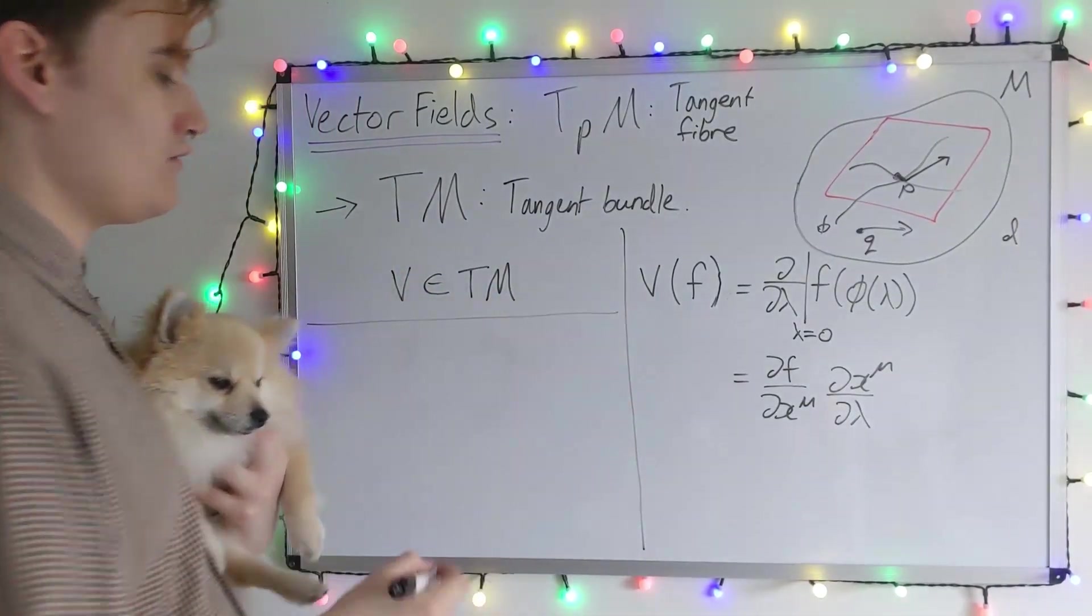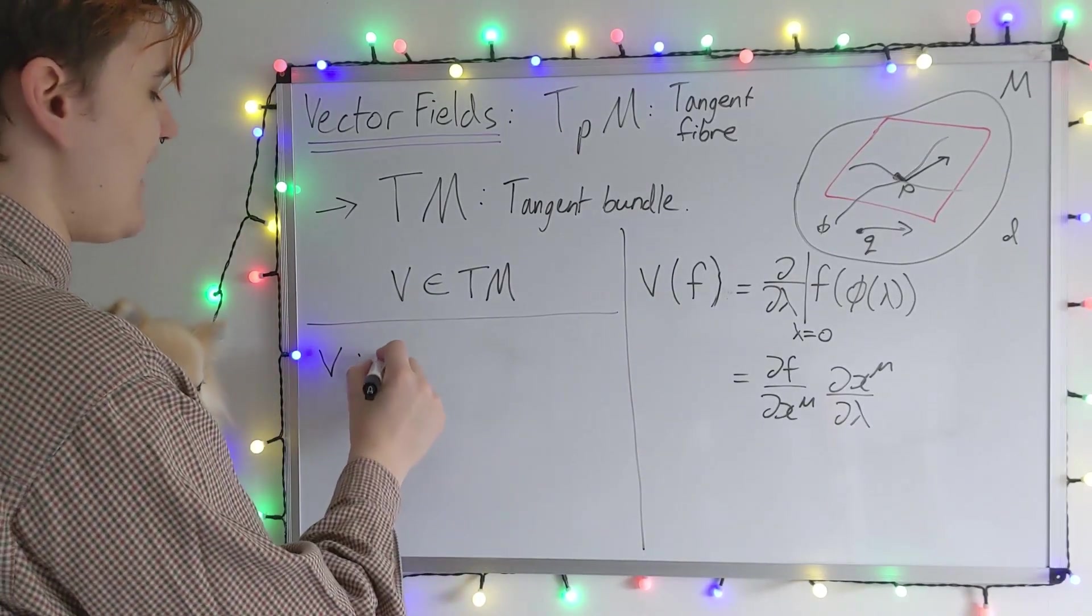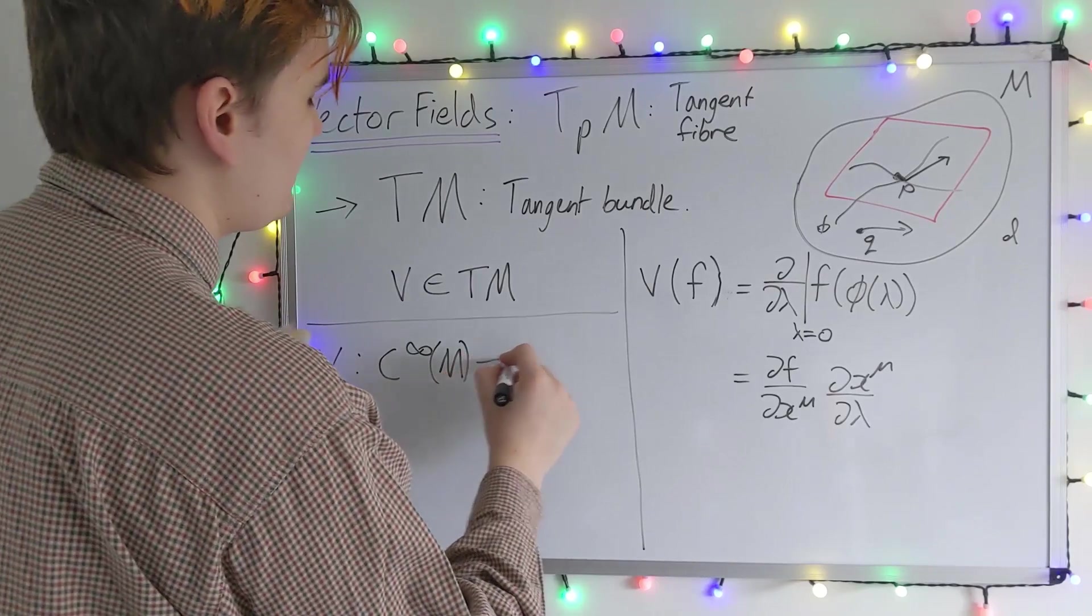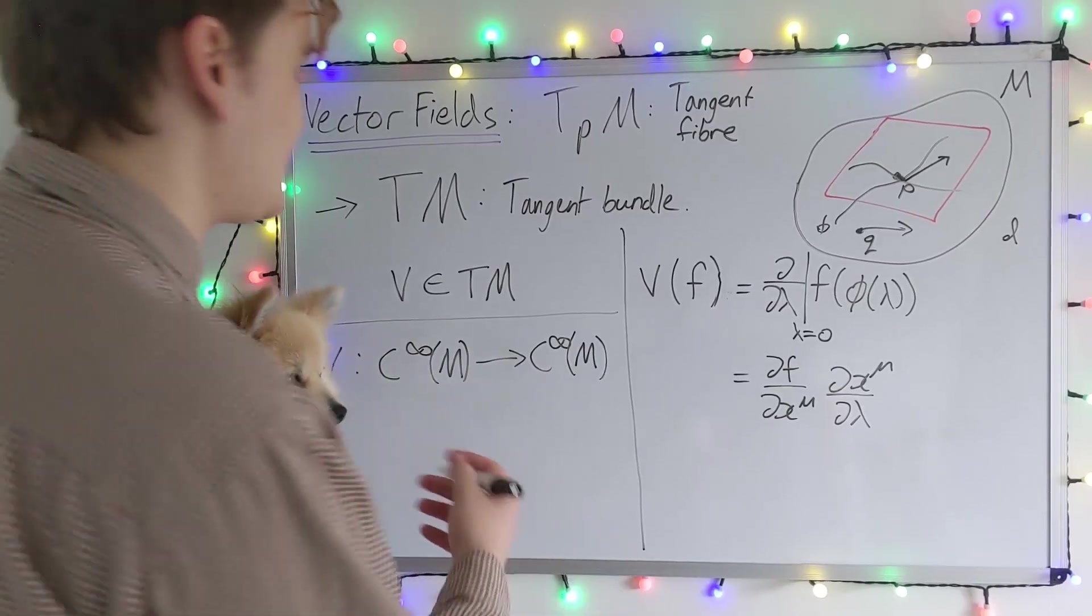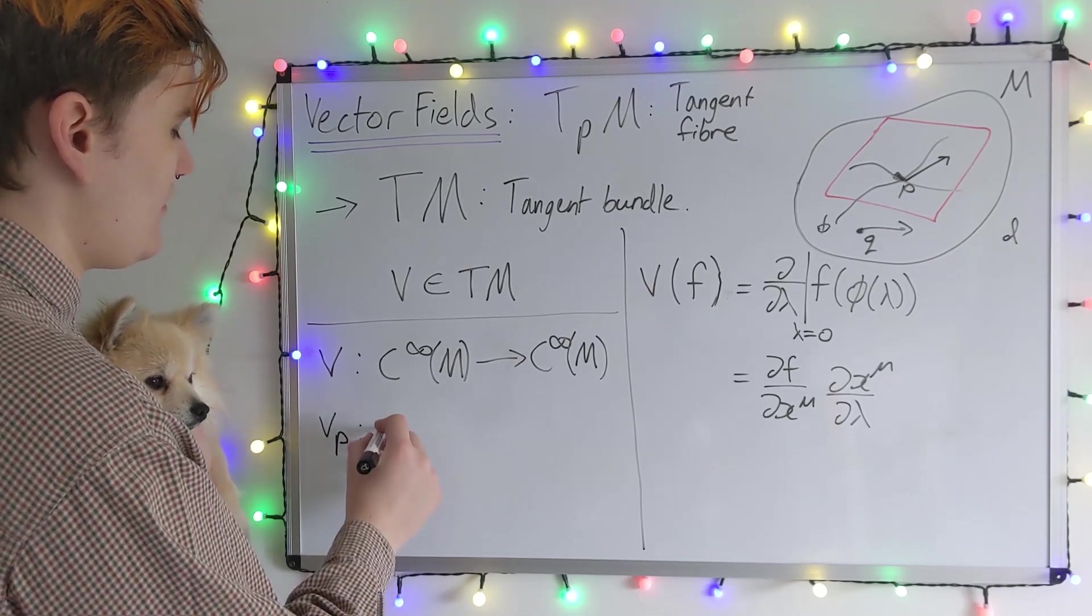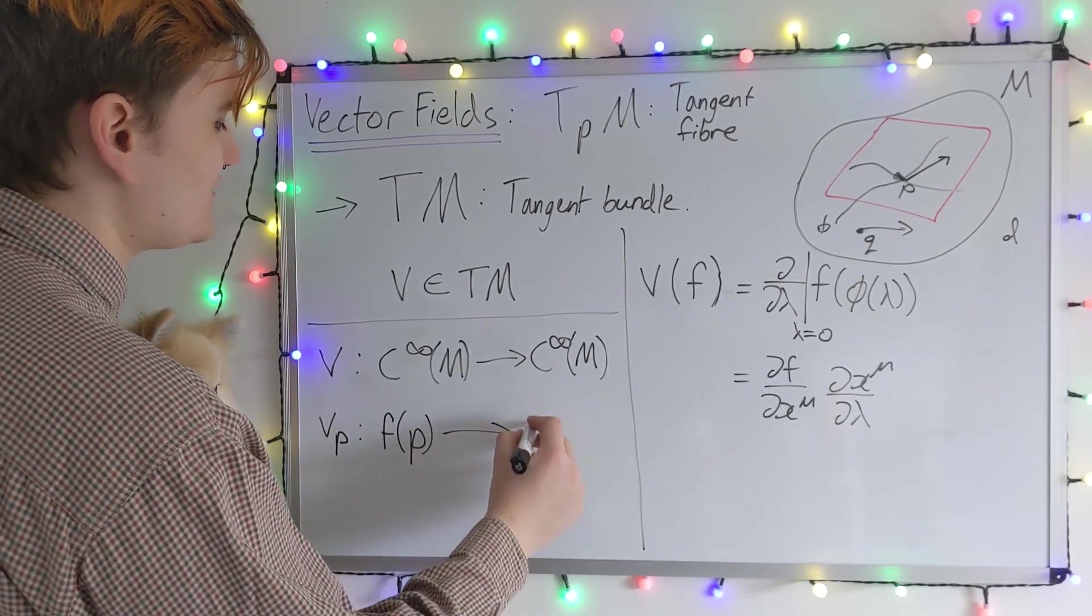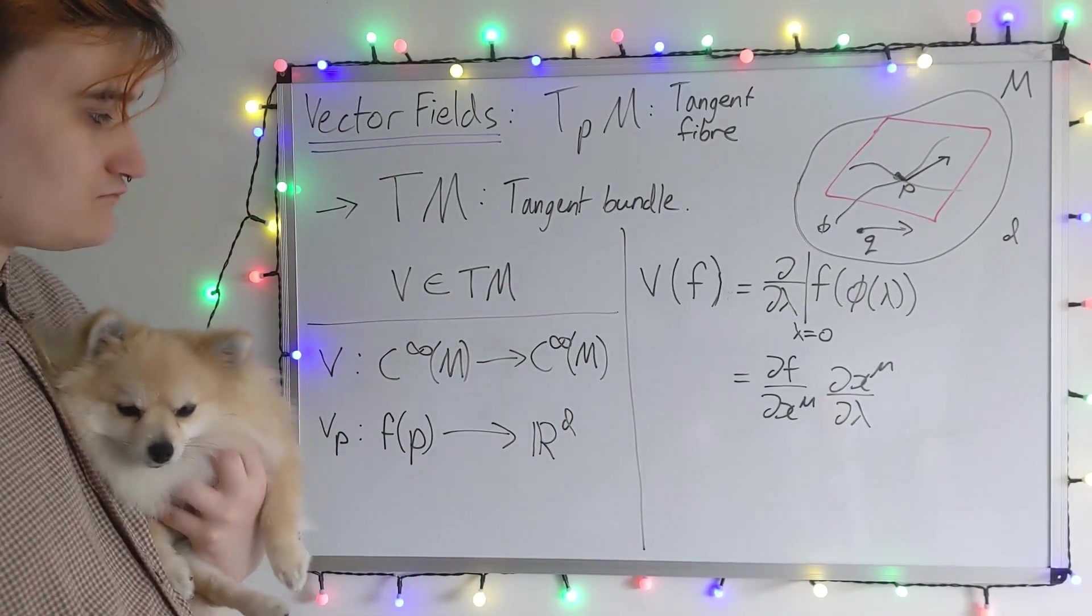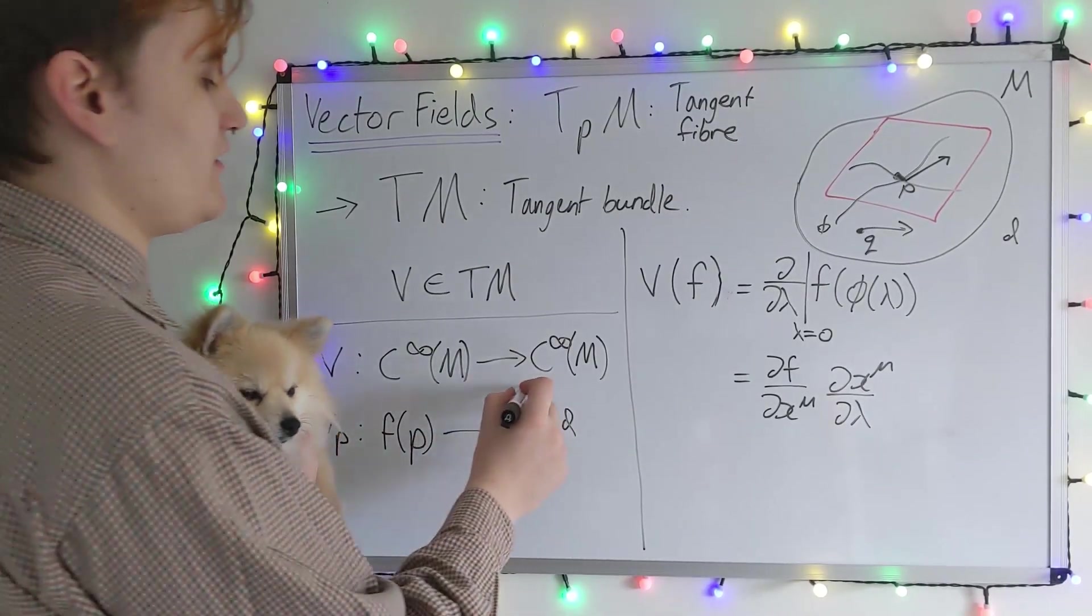We usually like to say that a vector field, I'm going to give it the name v, is now a map from c infinity of m. So it's mapping smooth functions on the manifold into smooth functions on the manifold. Whereas in contrast, a single vector mapped, if I call that v subscript p, that maps a single value of a function into just a real d-dimensional vector. Whereas now we're going to be mapped into essentially a vector-valued function, which is defined over the whole manifold.